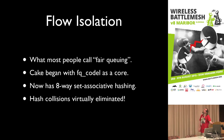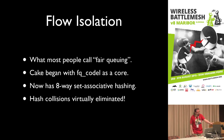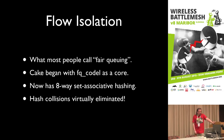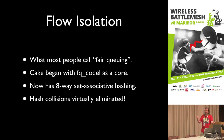The next feature of FQ-CoDel, which CAKE has inherited, is flow isolation — which most people call fair queuing. But fair queuing has a particular meaning in the academic literature, so we use flow isolation instead. CAKE began with FQ-CoDel as a core, so it has inherited this feature, including the deficit round-robin variant.